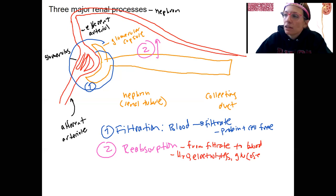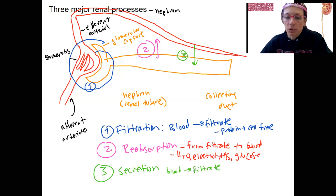Number three is secretion. Secretion is from the blood back into the renal tubule. This occurs to less stuff. So it's selectively moving substances from the blood to the filtrate. So additional wastes, for example.